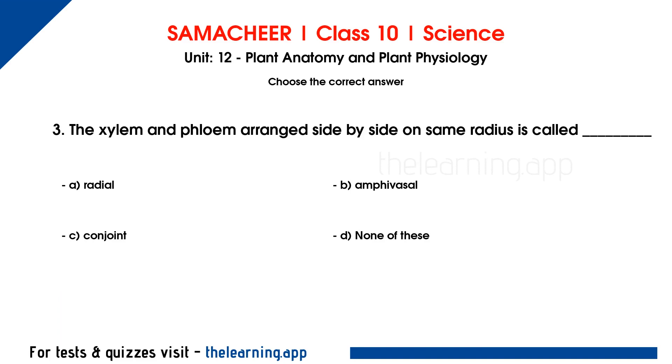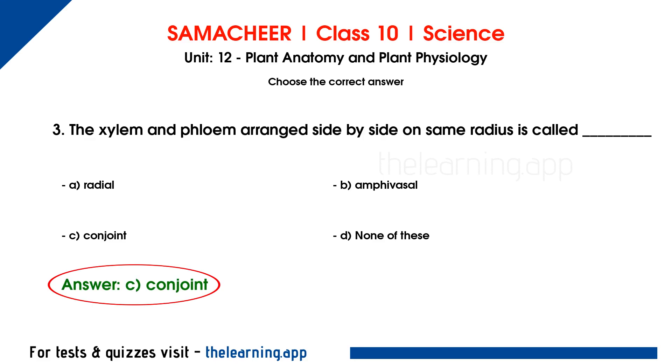This is called a dash. Options are A, radial; B, amphicribal; C, conjoint; D, none of these. The correct option is C, conjoint.